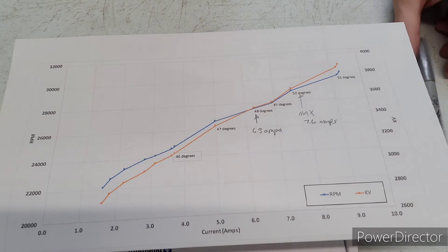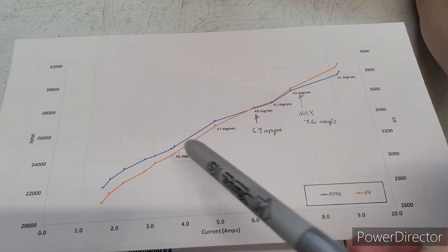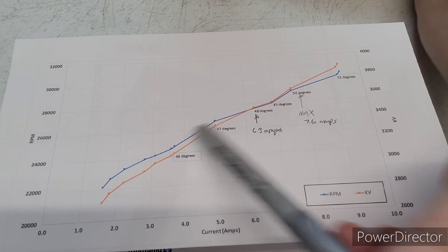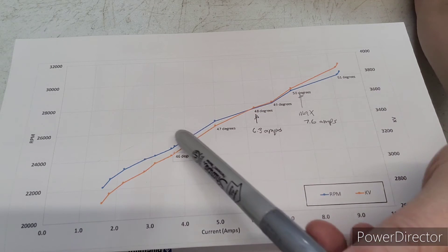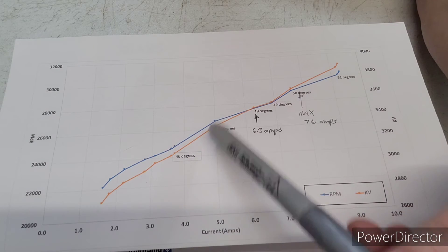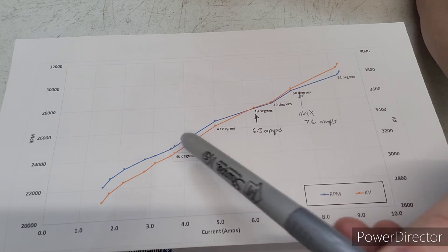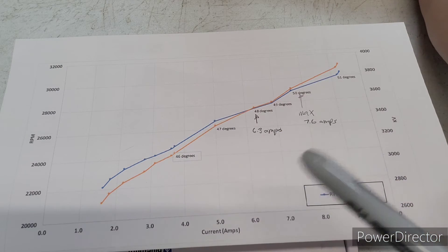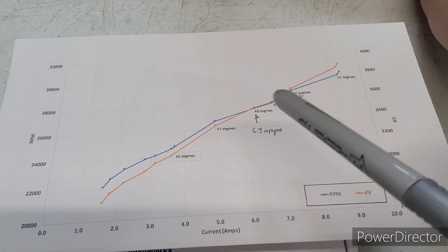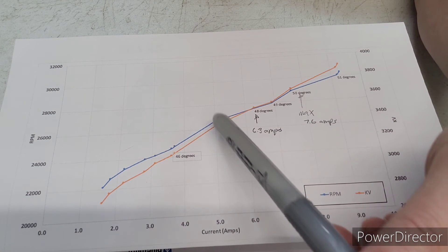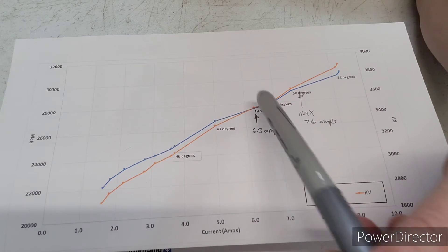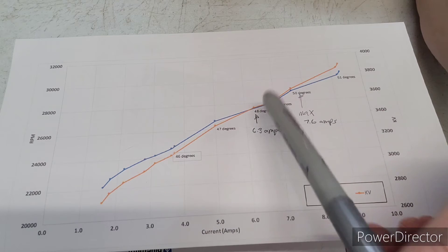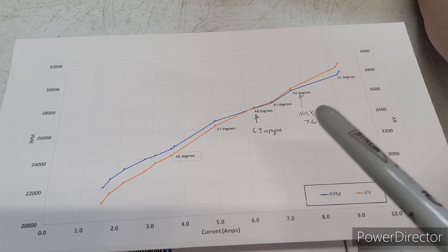And so what you're looking at is when you jump one degree, how far across this way do you go? Cause that means that's how much amperage you've jumped. And so you can see from 46 to 47, we jumped like 1.3 amps. Another pretty significant jump from 47 to 48, like another roughly 1.3 amps.